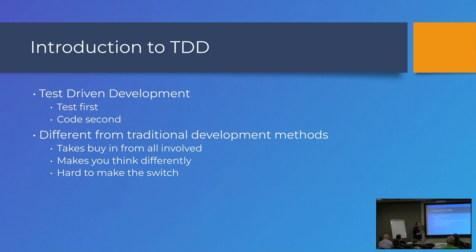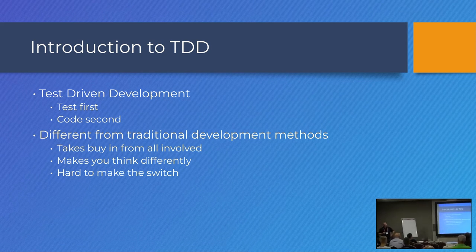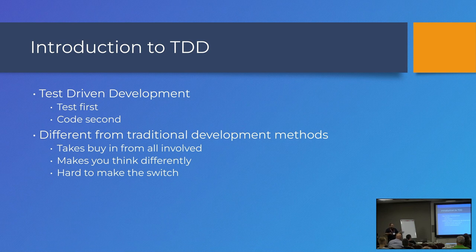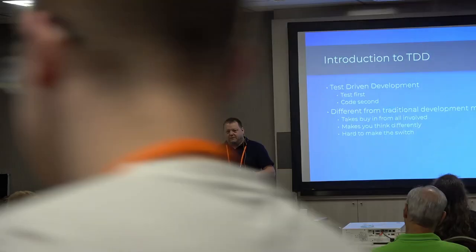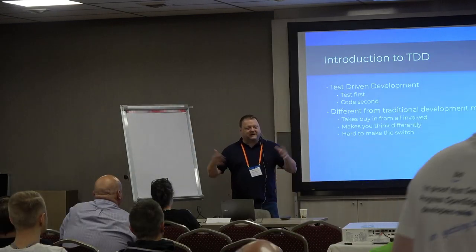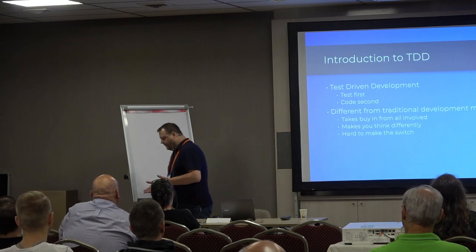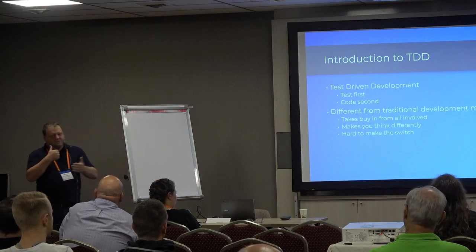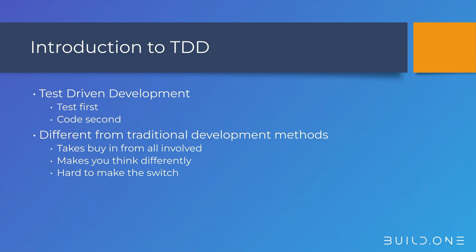Test first, code second — it's very different from traditional methods of development. It also requires everyone to buy into the process. It's expensive in terms of time to start with, so your development time is going to be much more than you're used to, but then you don't have to write the tests afterwards. Because one of the problems with the traditional development method is that you write the code and then say, oh, we don't have time to write tests — we've got to get the next feature in. And your code ends up not having unit tests.